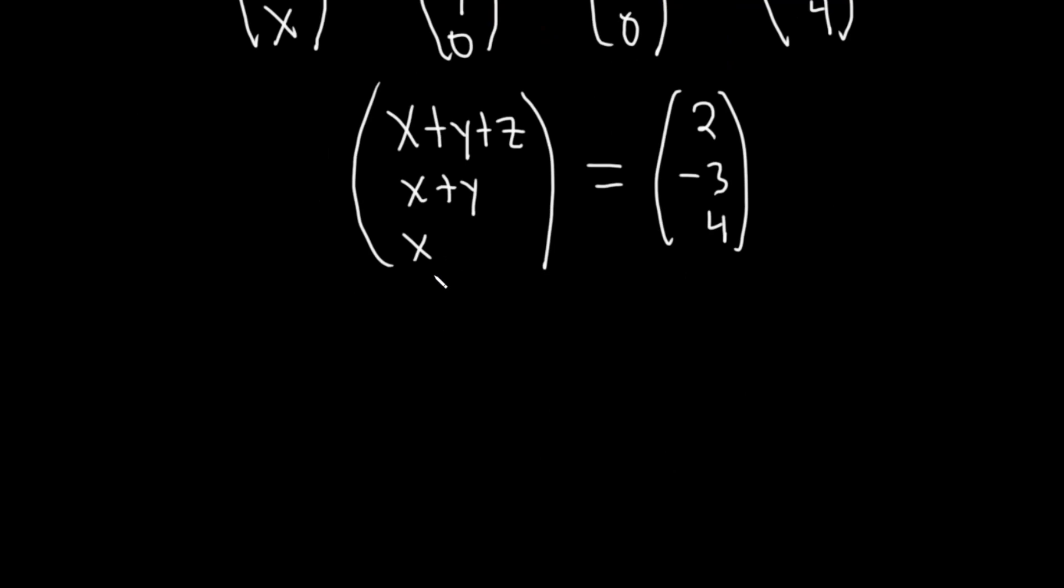And then two vectors are equal if their components are the same. So x plus y plus z equals 2. x plus y equals negative 3. x equals 4.